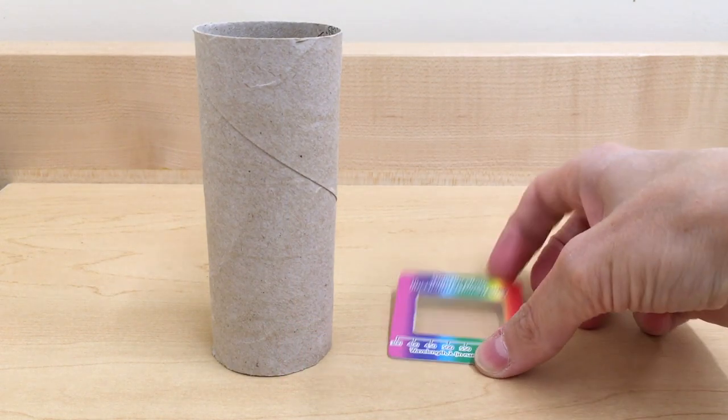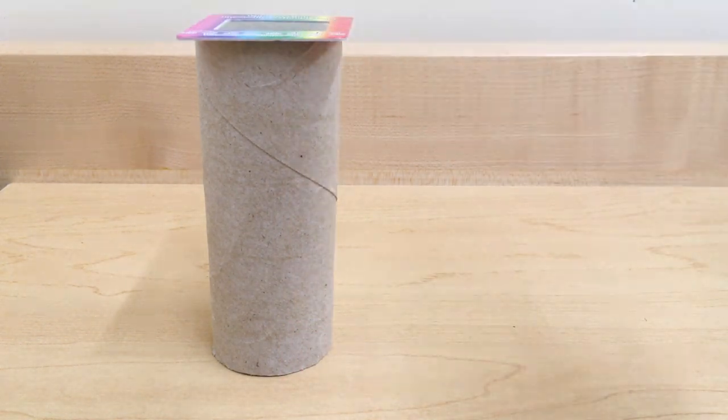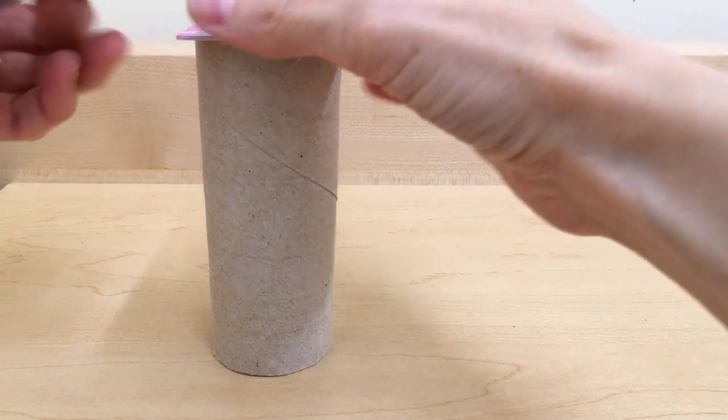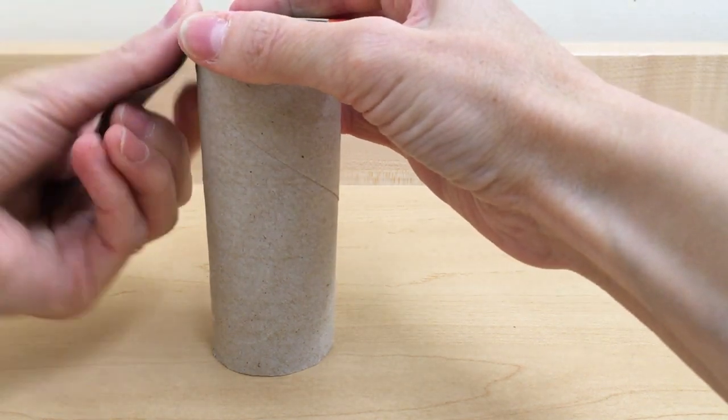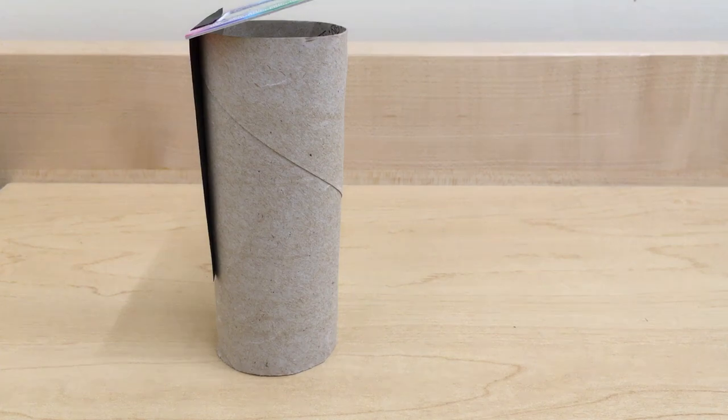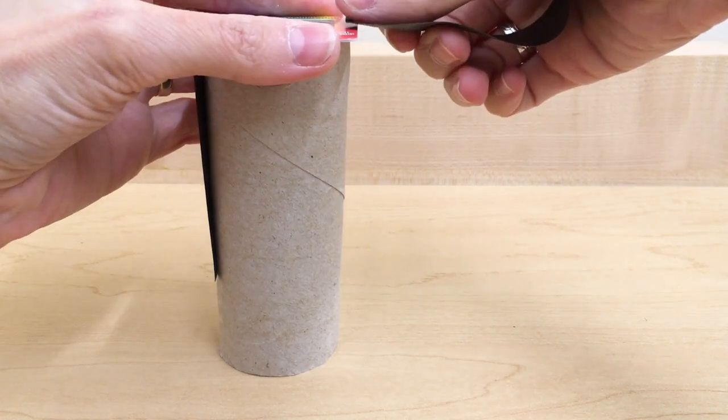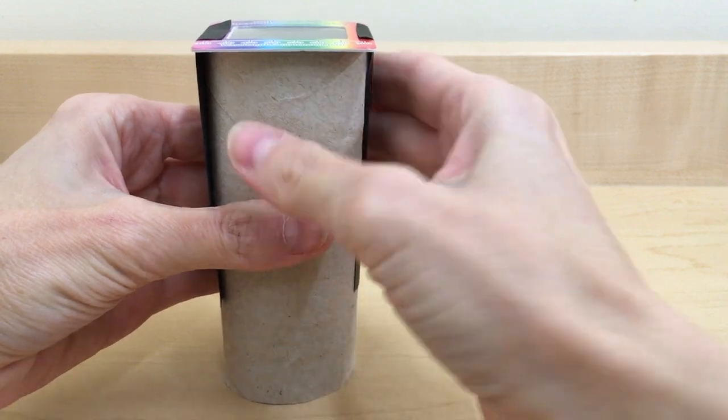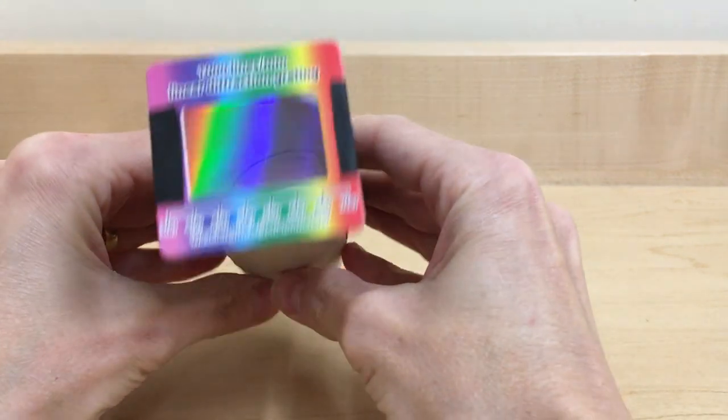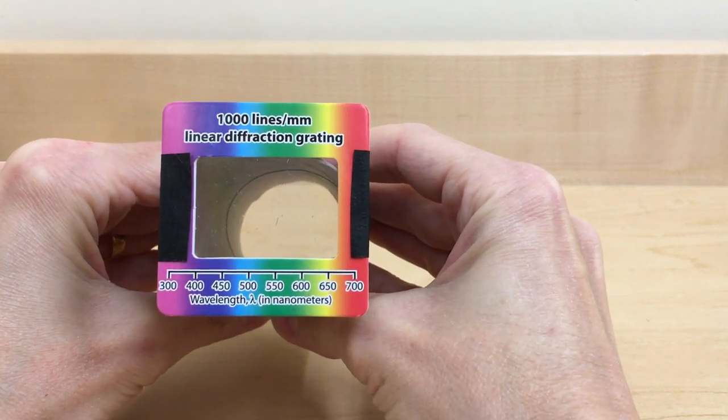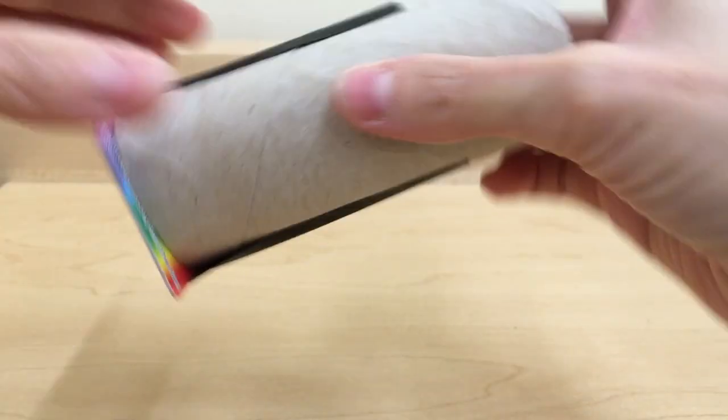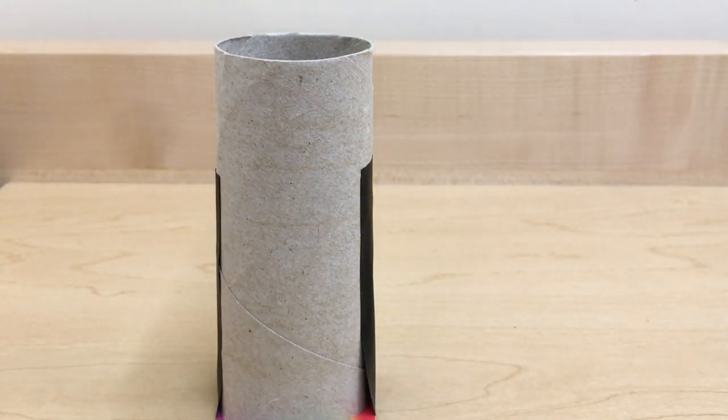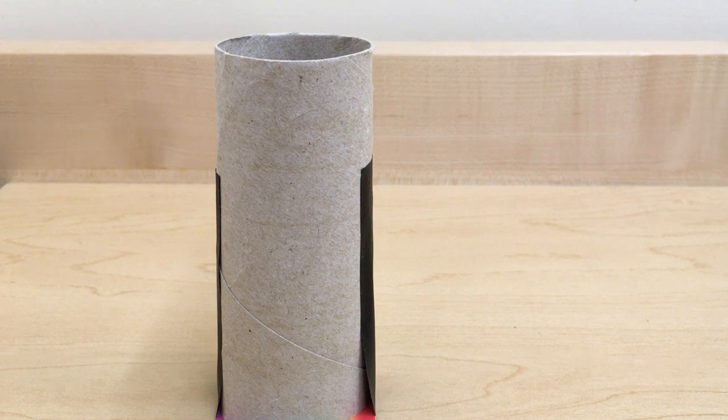To begin, center the diffraction grating on one end of the toilet paper roll and tape it down. Then, keeping the words upright, flip it over and create a slit with tape on the other end.